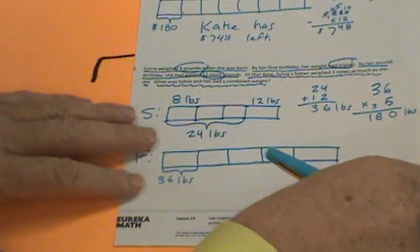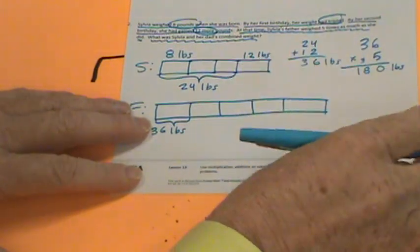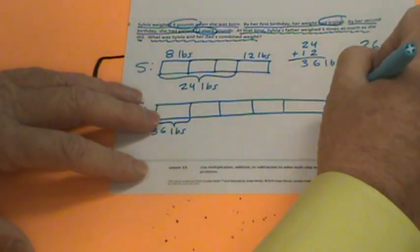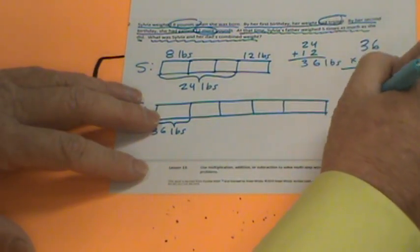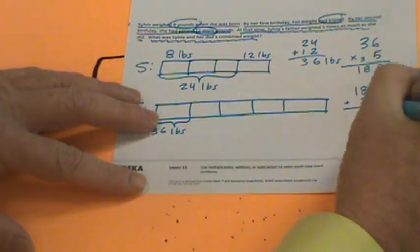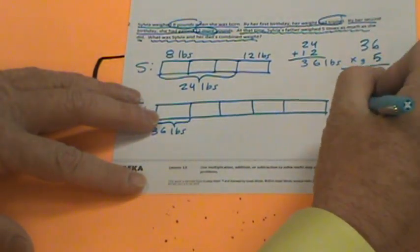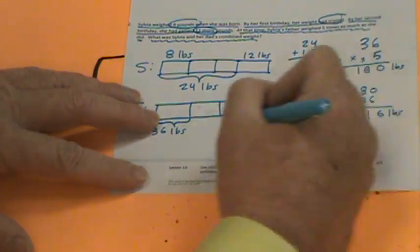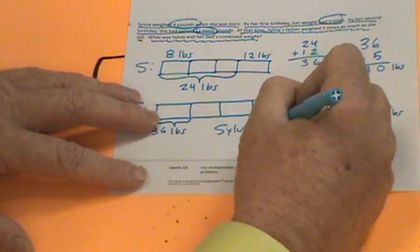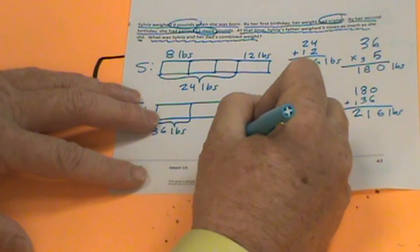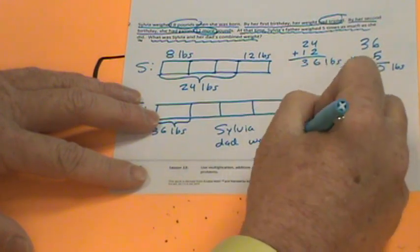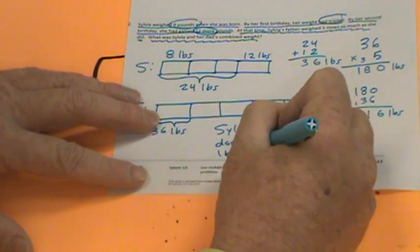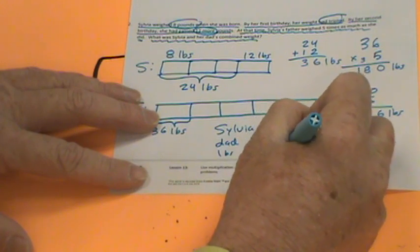Let's write this in a sentence. But there's even more — what was Sylvia and her dad's combined weight? So now we have another step. 180 plus 36: zero plus six is six, eight plus three is 11, and one plus one is two. So Sylvia and her dad weigh 216 pounds altogether.